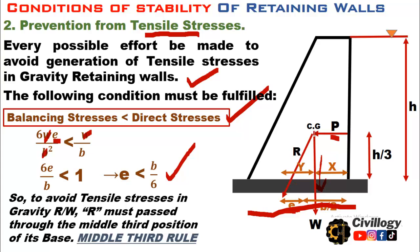If R falls outside this middle third distance, the wall will not be stable against tensile stresses and failure will occur. The distance E is very important. If this failure occurs, this is a hit-and-trial situation: to stabilize the wall, you will have to increase the base of the wall so that the resultant R falls within the middle third.